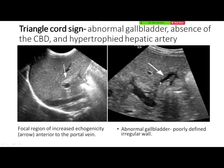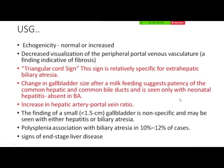We have to look for the gallbladder — there is abnormal shape, where the length is more than the breadth. We ask the mother to feed the child and repeat the ultrasound. If there is a change in size of the gallbladder after feeding, that means there is bile secretion and the CBD is patent. The last feature is increase in hepatic artery to portal vein ratio — normally the hepatic artery is smaller than the portal vein, but in biliary atresia it hypertrophies and increases.